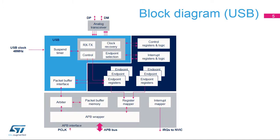The block diagram of the USB Full-Speed Device Controller shows the various building blocks inside along with its analog transceiver, which manages the physical layer, shown above. The physical layer, or PHY, handles the analog signal levels, including specific level detections, as well as battery charger detection functions.